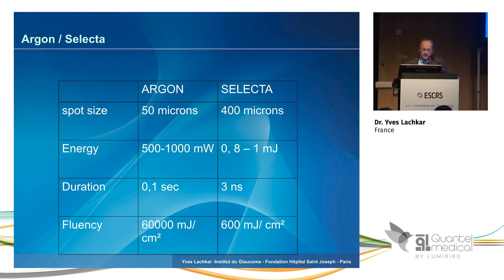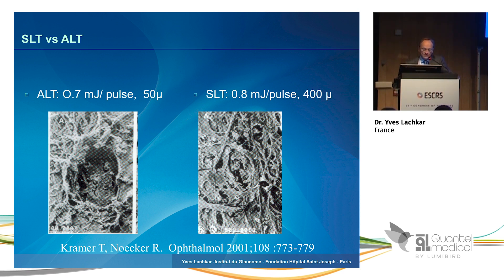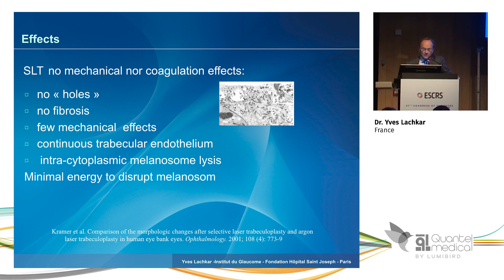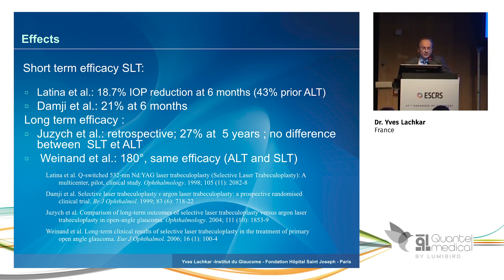So it's very important. If we compare the ARCON and SLT, the frequency is much lower with SLT rather than ARCON. You can see here the effect of ALT and here the SLT — there are no burns, no fibrosis, no mechanical effects. It's more or less an effect on the melanosome. If we compare SLT and ARCON, the short-term efficacy is more or less the same, but it's very difficult to compare all the published studies because we have a huge difference in the size and number of quadrants treated.